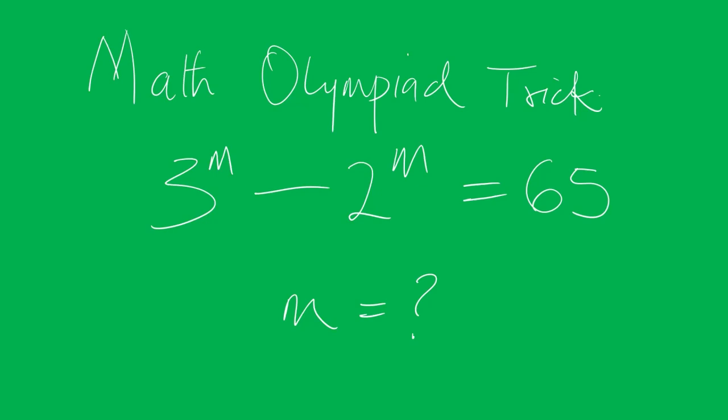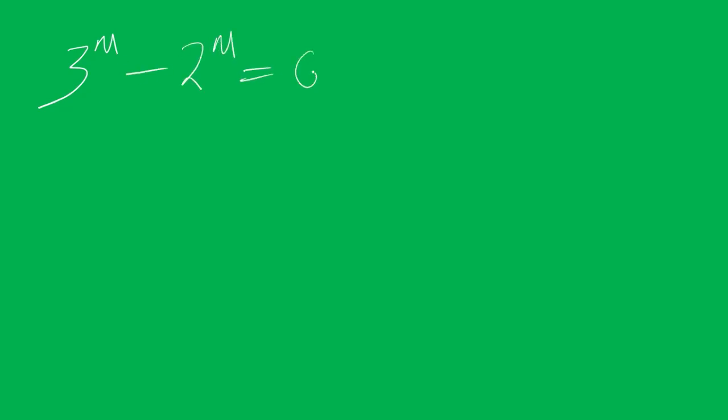This problem is solving for m. You have 3 to the power of m minus 2 to the power of m equal to 65.